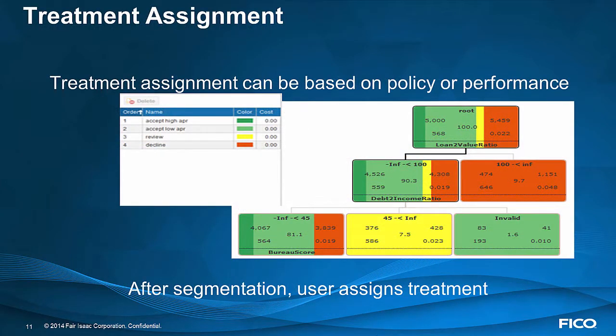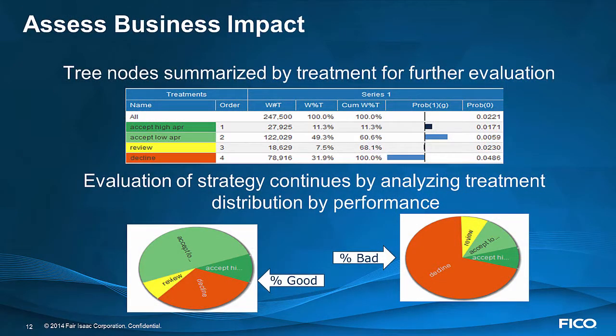Once you've got your segmentation complete, assigning treatment can be based on policy or performance. Analyzing that treatment at a summarized level and understanding it across a variety of different outcomes can be very helpful — not just understanding the bad rate or average revenue by treatment, but also understanding how the treatment distributes across populations such as your bad accounts.